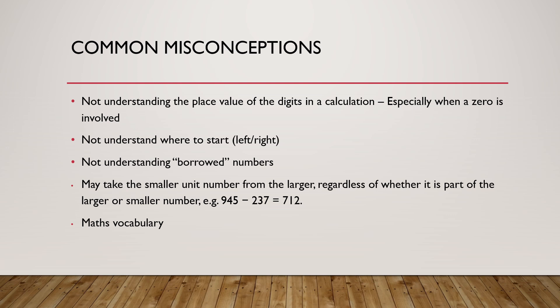A common mistake is taking the smaller number away from the larger number regardless of where it is within the calculation. Don't forget, we're taking the bottom number away from the top. So it's top take away bottom, not which number is smaller.